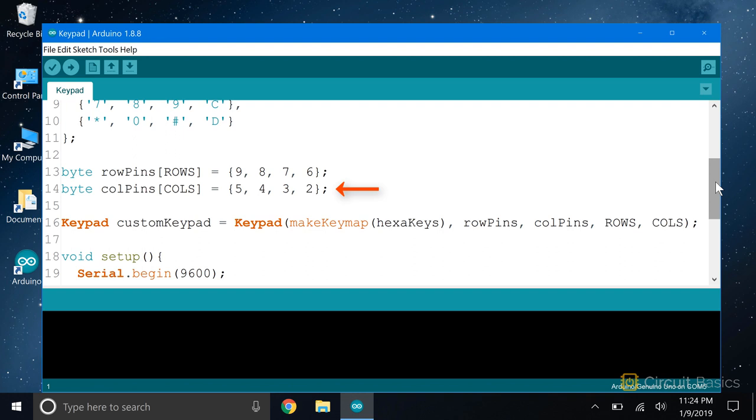Then we define how the column pins are connected. The first element in this array corresponds to the keypad's column 1 pin, so that's connected to Arduino pin 5. The second element corresponds to the second column pin, so that's connected to Arduino pin 4, and so on.